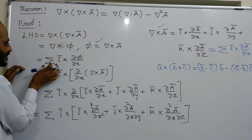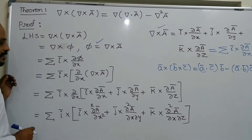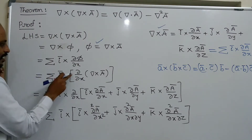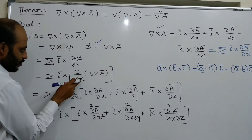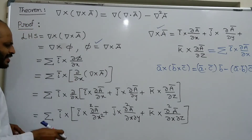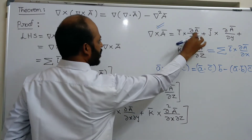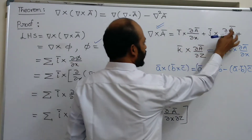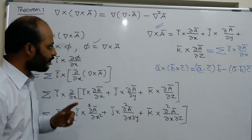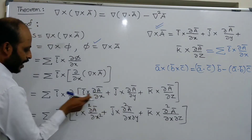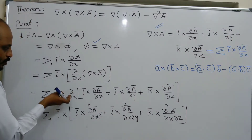So del cross phi equals summation i-bar cross dou phi by dou x, where phi is del cross A-bar. We substitute del cross A-bar: I-bar cross dou A-bar by dou x plus J-bar cross dou A-bar by dou y plus K-bar cross dou A-bar by dou z. We then differentiate every term with respect to x, giving i-bar cross dou by dou x of each of those terms.